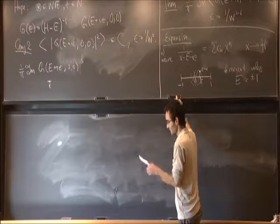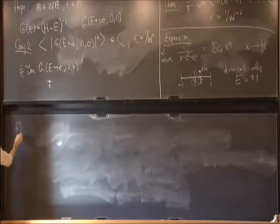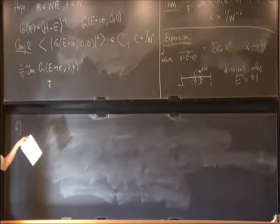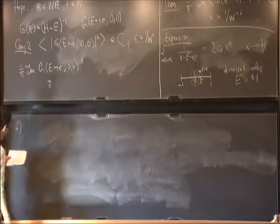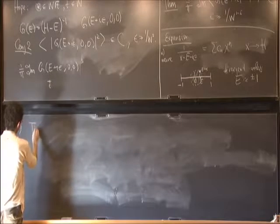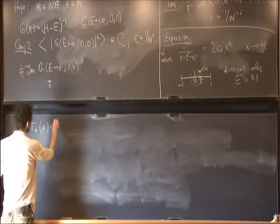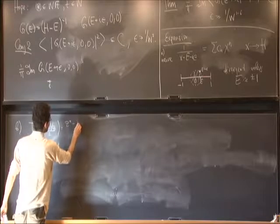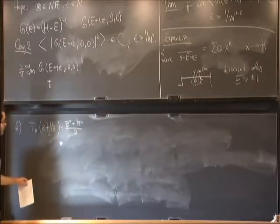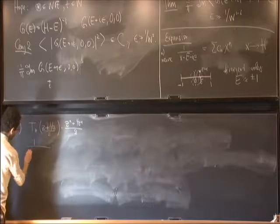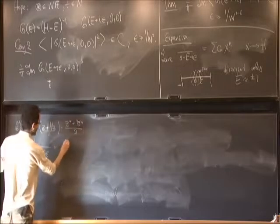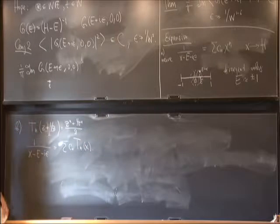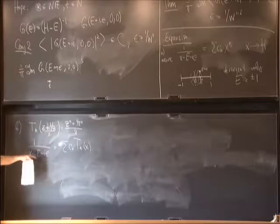There is a less naive idea closely related to self-energy renormalization. The idea is to use Chebyshev polynomials, defined as T_n(x) where x equals (z + 1/z)/2, so T_n = (z^n + z^{-n})/2. We expand 1 over (x minus E minus i epsilon) into a series of Chebyshev polynomials of x. These are polynomials of degree n, so let's see why this is better.